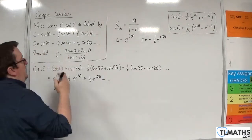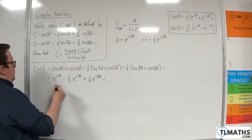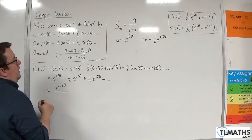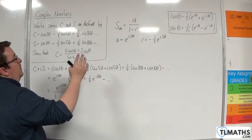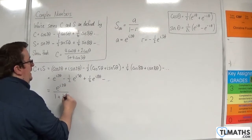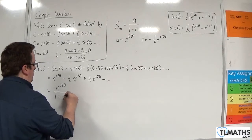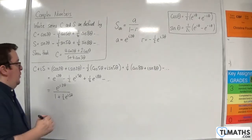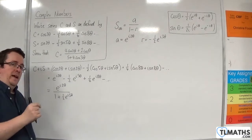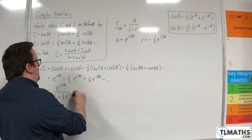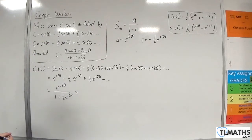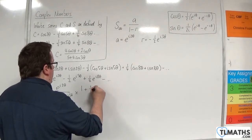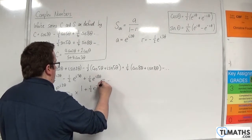So I'm going to plug that into the formula. We have A, which is e^(i2θ), over 1 plus one-half e^(i3θ). What I'm going to want to do is get rid of the i's from the denominator, so I'm going to multiply the top and bottom by the complex conjugate, which is 1 plus one-half e^(−i3θ).